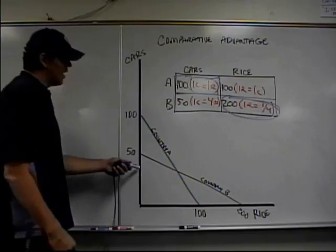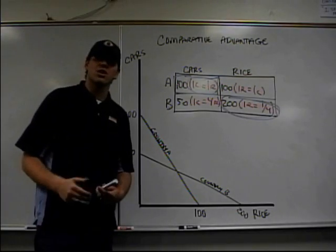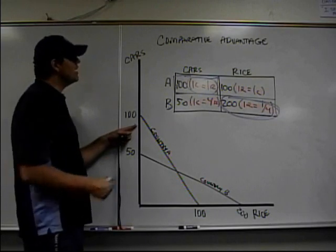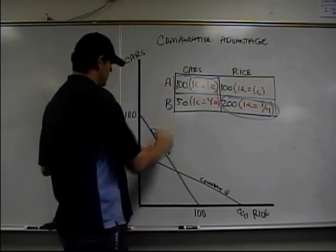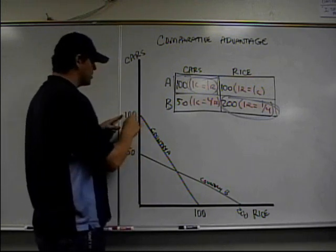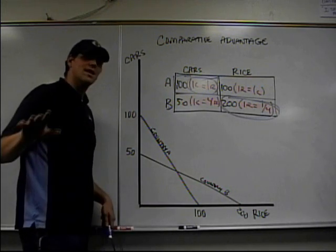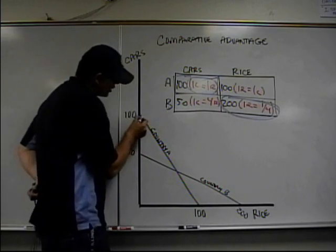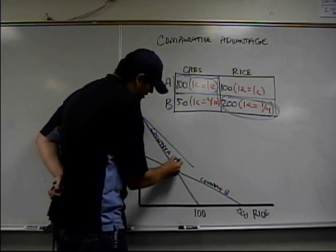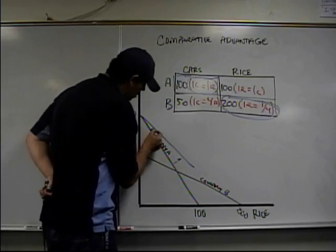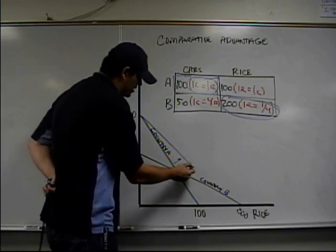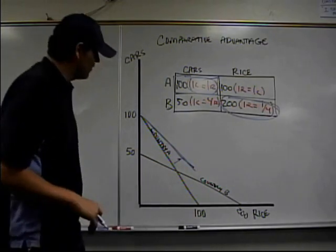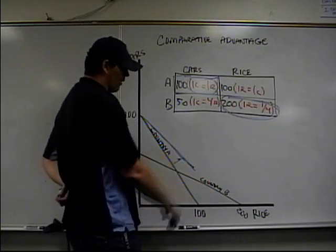Now the question is, what does it do down here? It actually shifts the curve — this is going to get tricky. Country A is going to produce cars. If Country A produces all cars, they'll produce 100 cars, and they're going to trade for rice. When they do that, it's going to shift out the curve for Country A. It shifts the whole curve out. Trade shifts the curve — imagine it would kind of go all the way down.